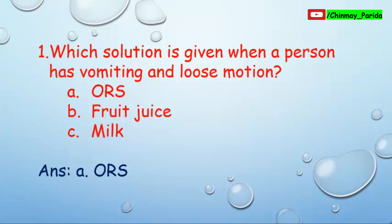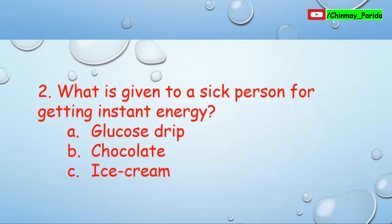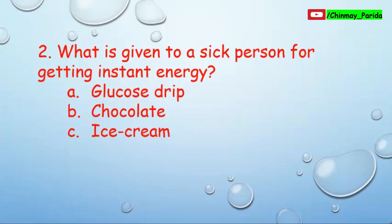ORS solution gives relief from vomiting and loose motion. Question number two: What is given to a sick person for getting instant energy? Option A: Glucose drip, Option B: Chocolate, Option C: Ice cream. The correct answer is Option A — glucose drip. It gives instant energy to a sick person.